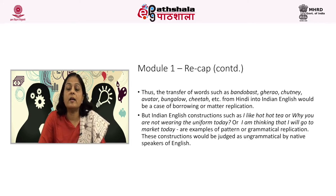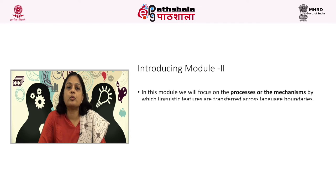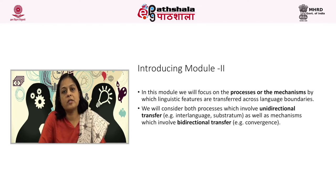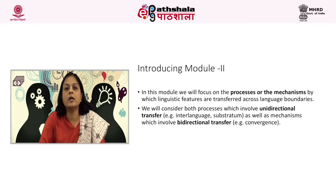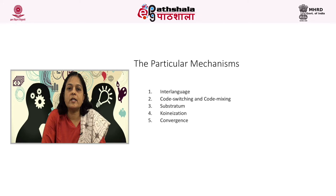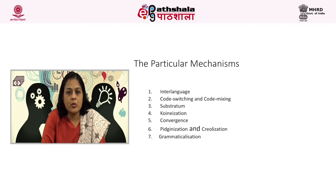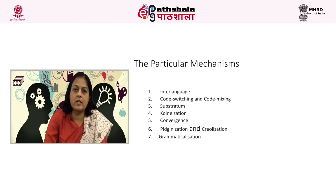These constructions would be judged as ungrammatical by native speakers of English. In this module, we'll focus on the processes or mechanisms by which linguistic features are transferred across language boundaries. We'll consider both processes which involve unidirectional transfer, for example interlanguage and substratum, as well as mechanisms which involve bidirectional transfer, for example convergence. The particular mechanisms discussed by contact linguists include interlanguage, code switching and code mixing, substratum, koineization, convergence, pidginization and creolization, and grammaticalization.